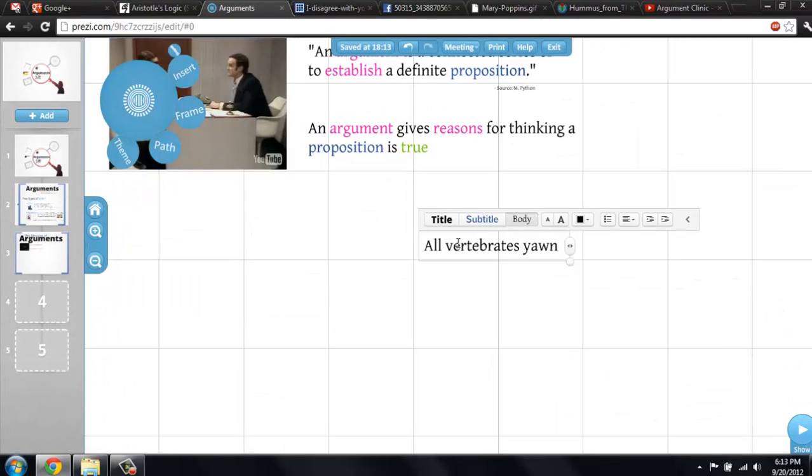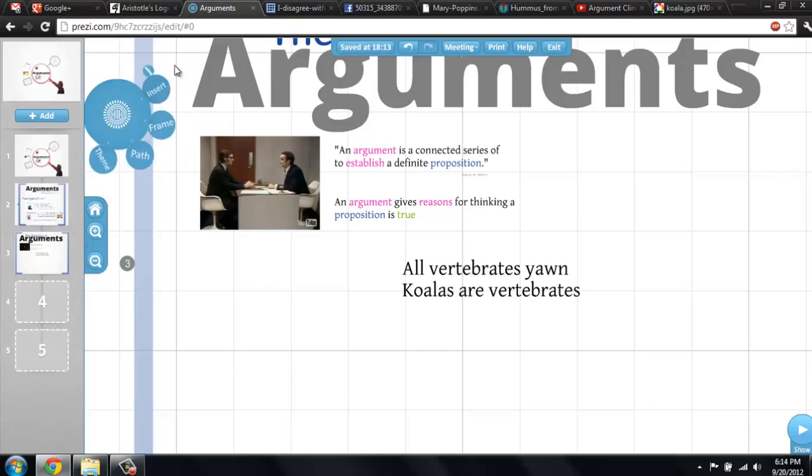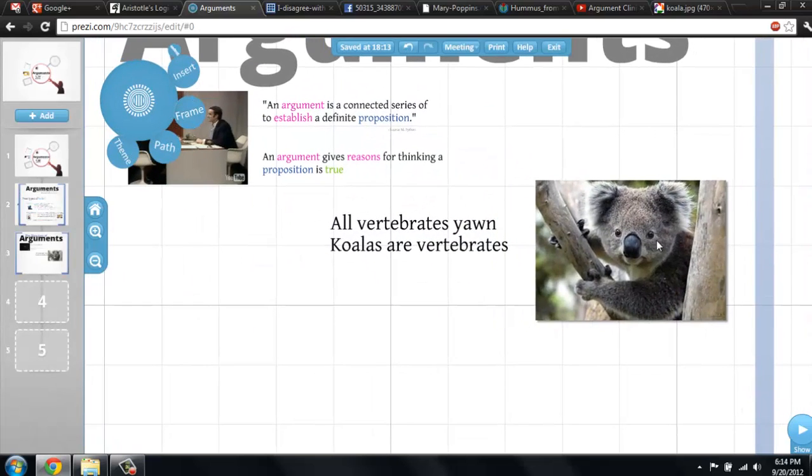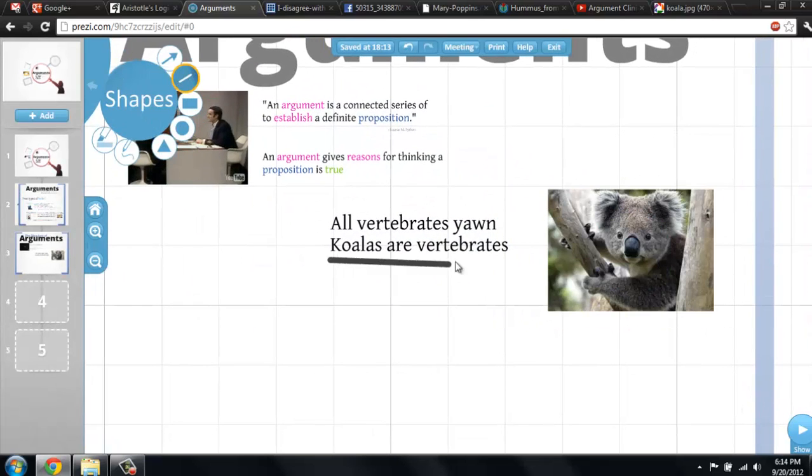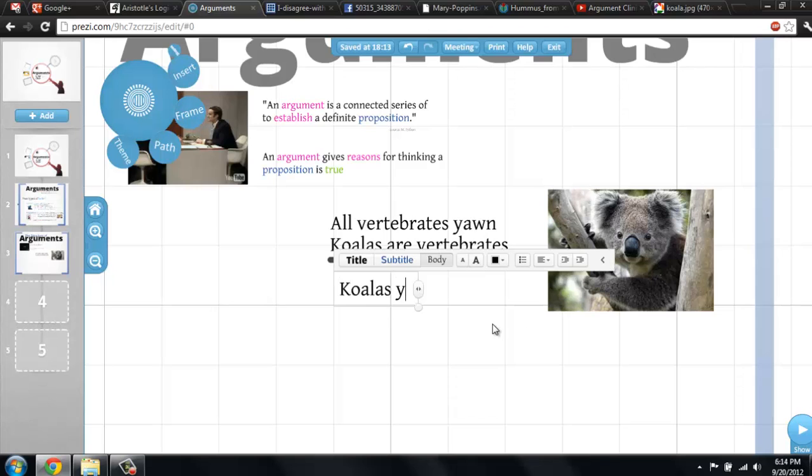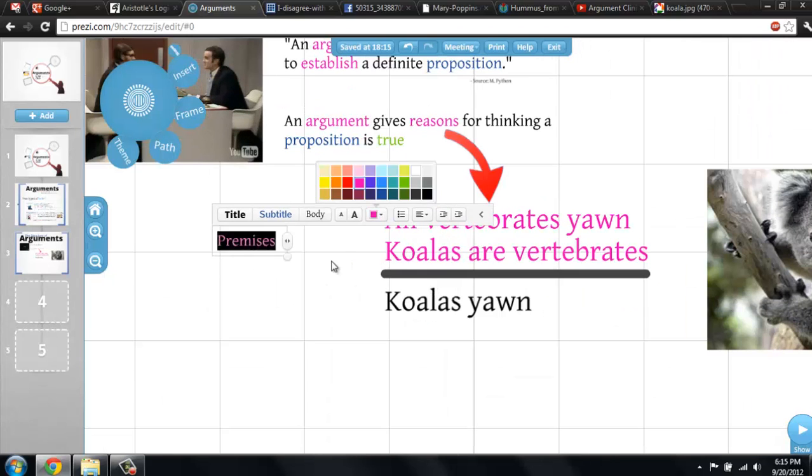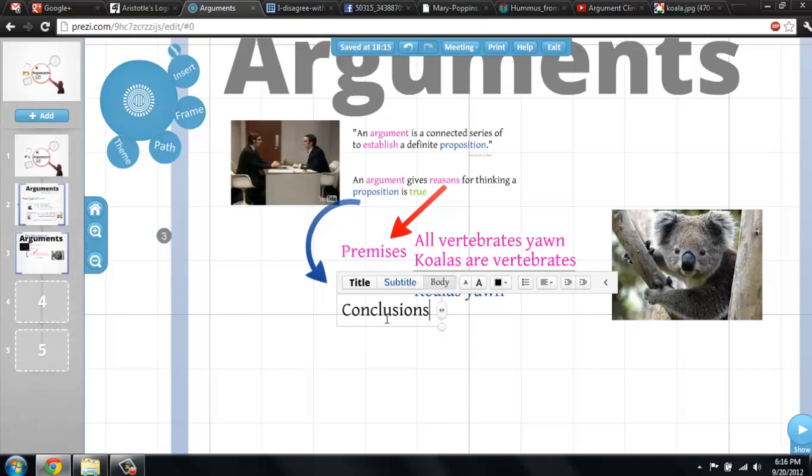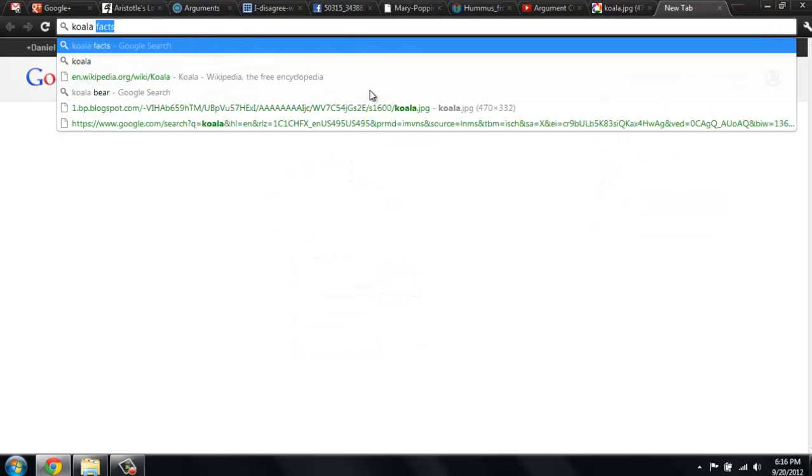Let's look at an example. Let's say that you know that koalas are vertebrates. I told you that all vertebrates yawn. Together, these propositions give good reason to draw the obvious conclusion that koalas yawn. We call those reasons premises, and they provide an argument for the conclusion, which is the proposition demonstrated to be true.